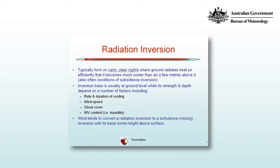Wind speed also plays a role. The radiation inversion occurs because the ground cools radiatively via long wave radiation, and the air just above it is in direct thermal contact, so the air cools as the ground cools. If the wind is too strong, that air at the surface will mix with warmer air aloft and will inhibit the cooling, but if you want to produce a deep inversion then you do want a little bit of wind to mix that through — just not too strong.